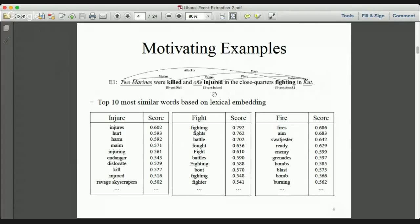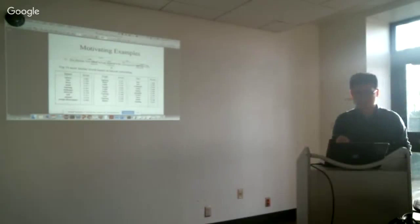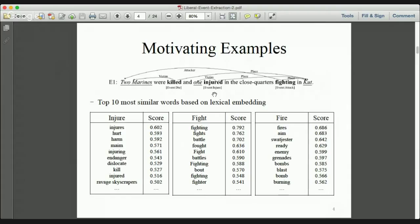I'll show some examples to demonstrate our motivations. These three tables show the most similar words based on word embeddings. From groups of similar words centered on 'injure' and 'fight,' we can find that the type of an event trigger is highly related to its general semantics. But for polysemantic words like 'fail,' the semantically related words may reflect several types of events.